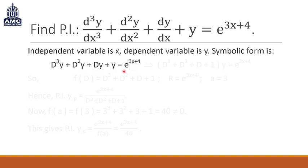This is the symbolic form of the equation. What we do now is on the left hand side, we take the y common out. Since operators are associative, we take the y outside and we write D³ + D² + D + 1, and of y as equal to e raised to the power 3x plus 4.